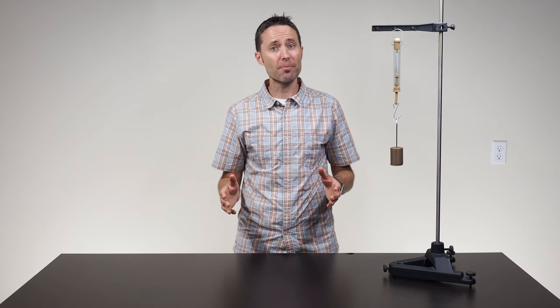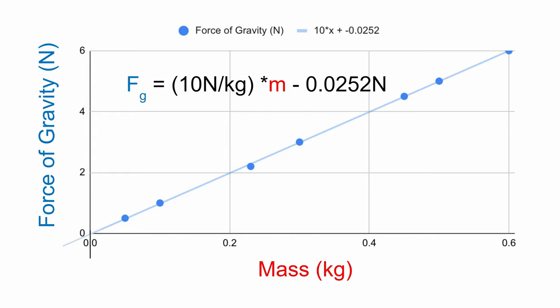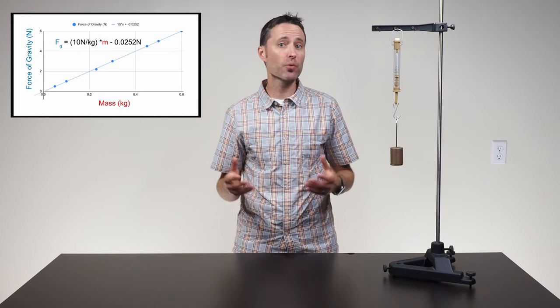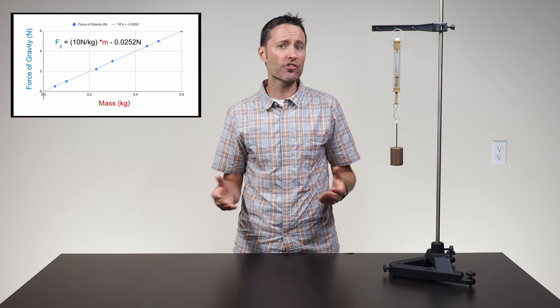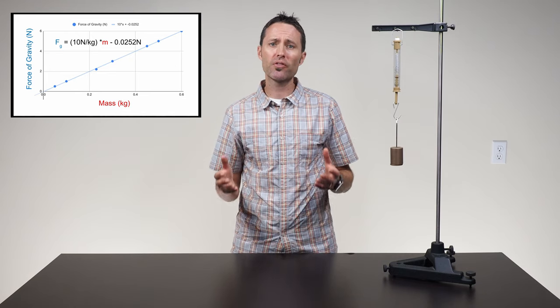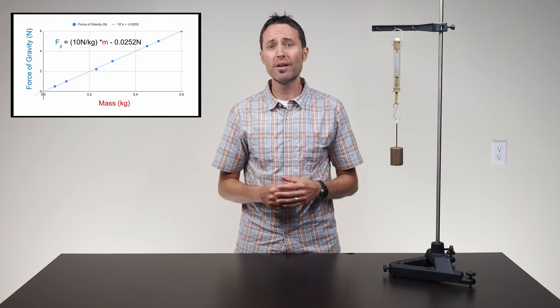To analyze the collected mass and gravitational force data, have students graph their data by placing the gravitational force values on the y-axis and the mass values on the x-axis. Show students how they can write an equation from their graph showing the algebraic relationship between the force of gravity and the mass. Any linear relationship can be written in the form y equals m times x plus b, but you want students' equations to include the specific variables and values from the graph of their specific data.